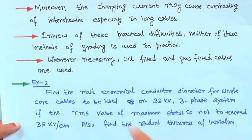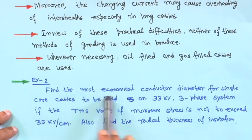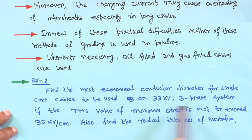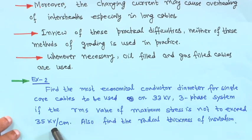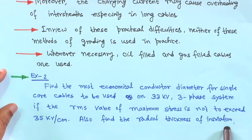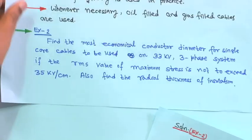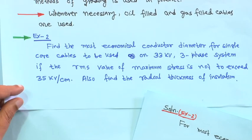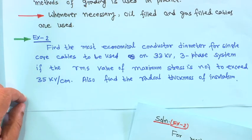Those are the things for cable. Now, another example — Example 2. It is given: find the most economical conductor diameter for a single-core cable to be used on a 33 kV three-phase system, if the RMS value of maximum stress is not to exceed 35 kV per centimeter. Also find the radial thickness of insulation. The operating voltage is 33 kV line-to-line, three-phase.